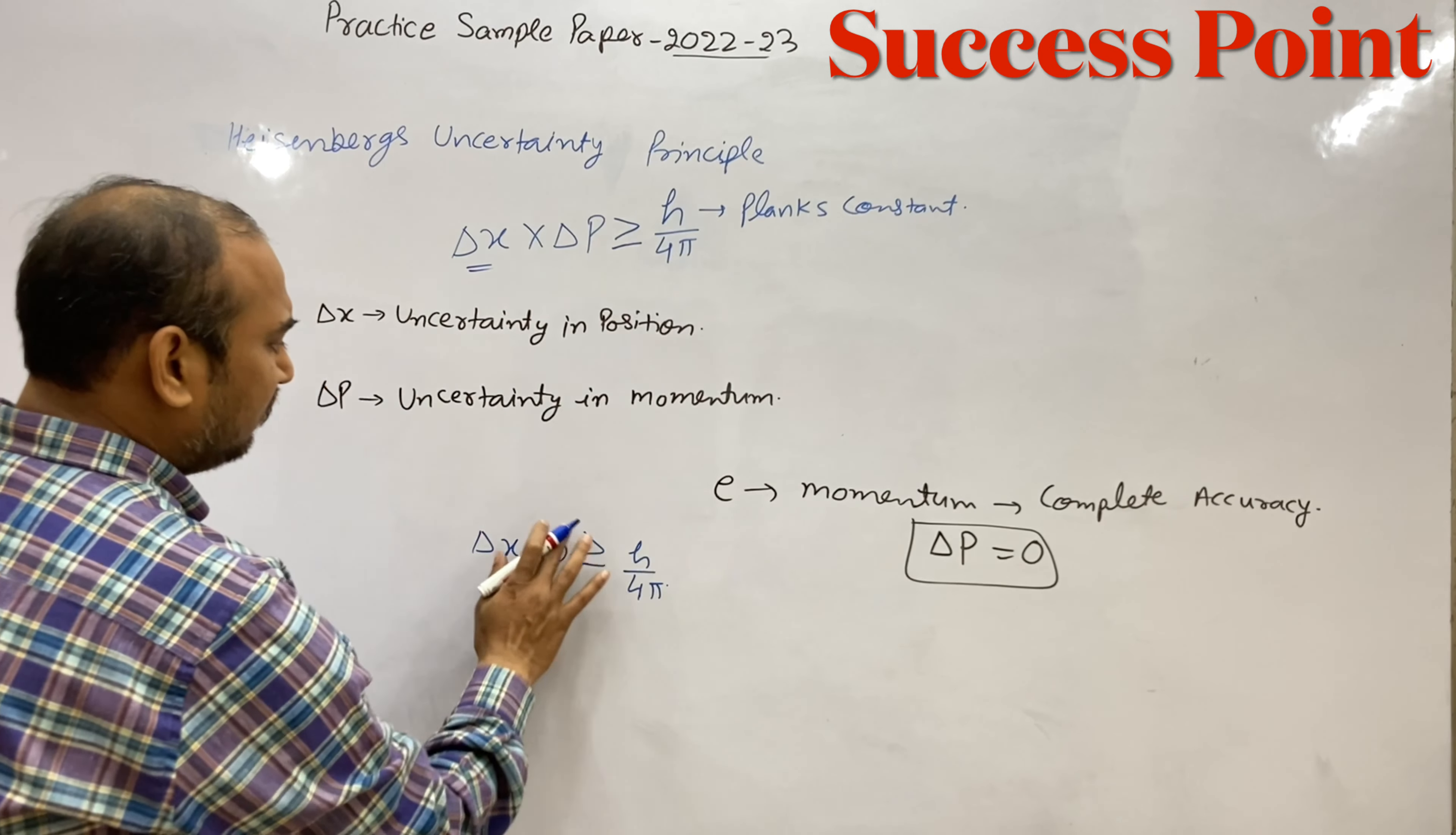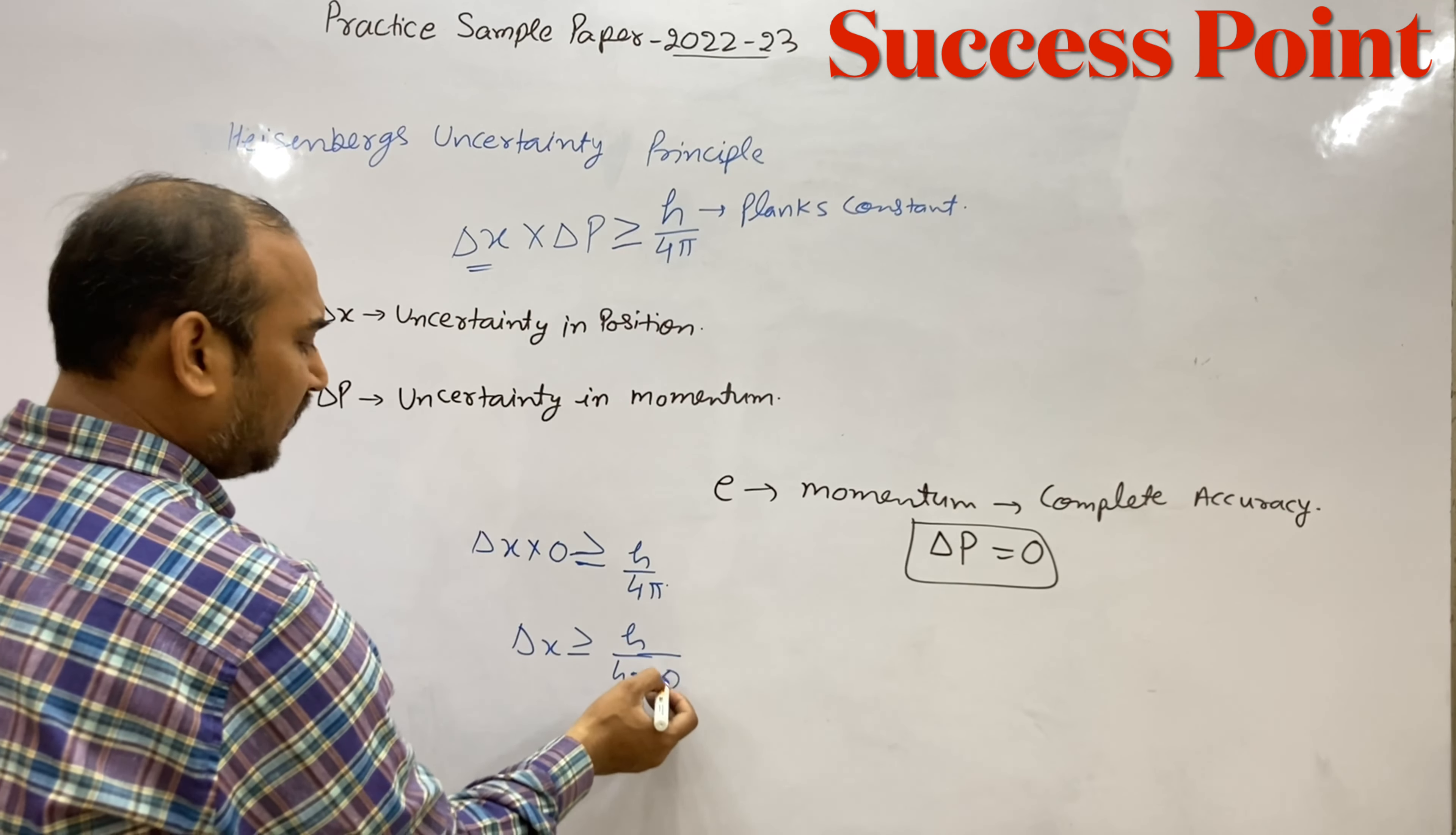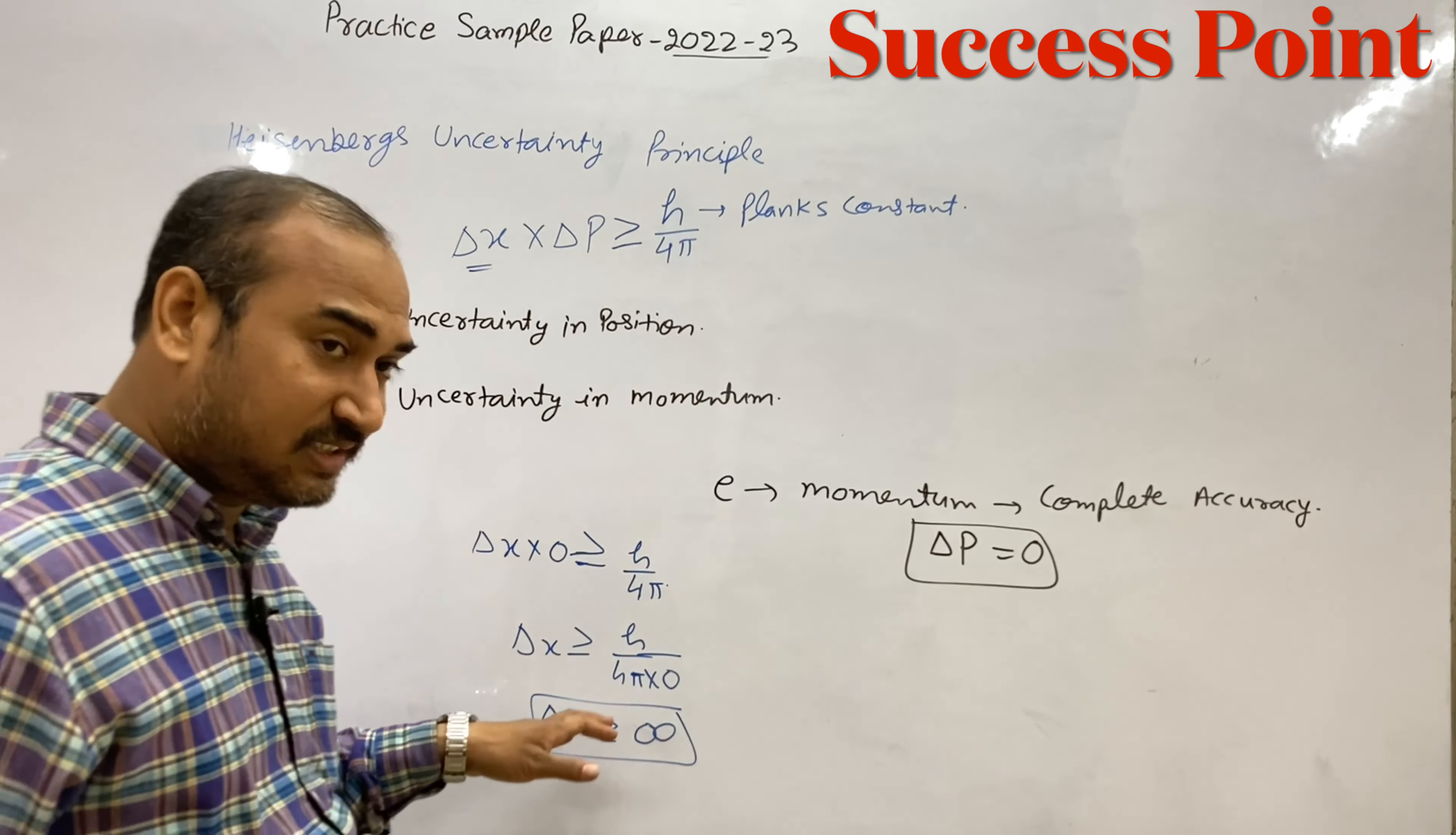So the value of delta x equals h upon 4 pi times delta p. When delta p equals zero, we get h divided by zero, which equals infinity.